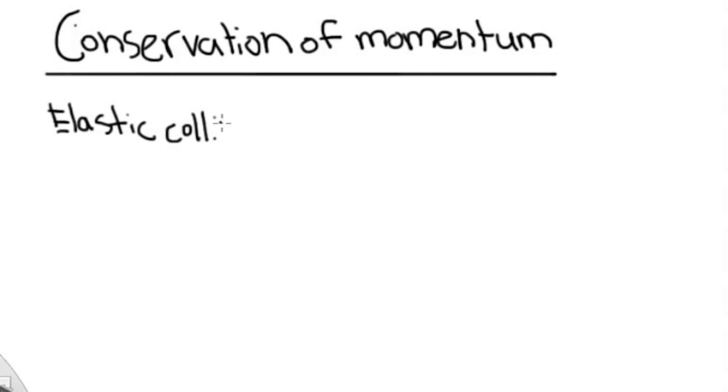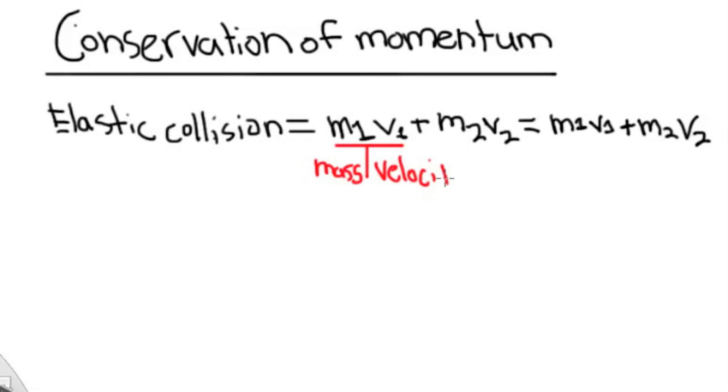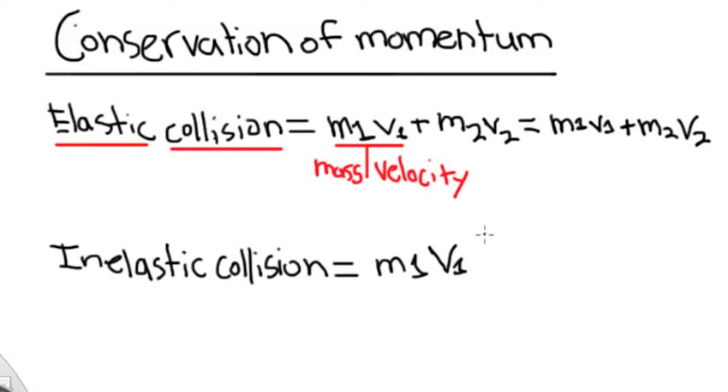In conservation of momentum, an elastic collision is measured M1 times V1 plus M2 times V2, which is equal to M1 times V1 plus M2 times V2, where M is mass and V is velocity. In an inelastic collision, however, it is measured M1 times V1 is equal to M1 plus M2 times V.